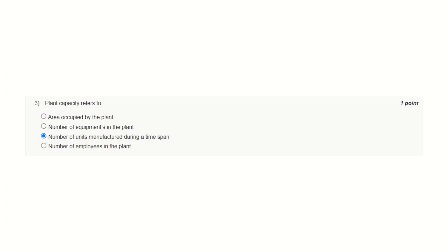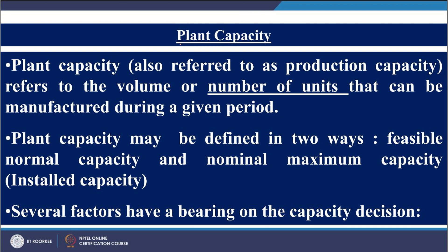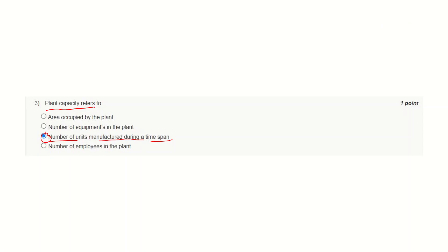Question number three. Plant capacity refers to — the correct answer is number of units manufactured during a time span. Let's go to the slide. Here in the slide title, plant capacity — you may notice in the first line itself, plant capacity, also referred to as production capacity, refers to the volume or number of units that can be manufactured during a given period. And hence this is the correct answer for question number three.